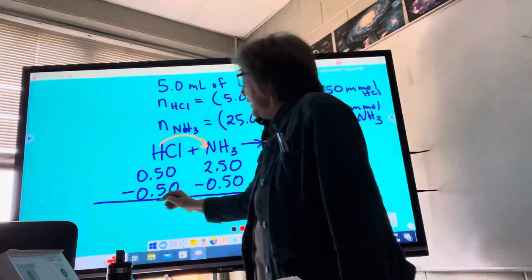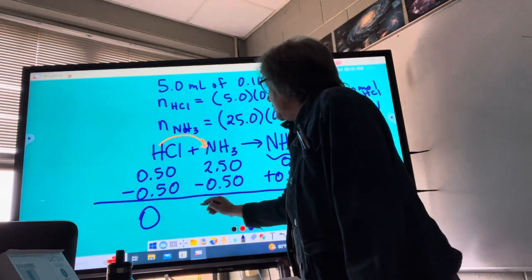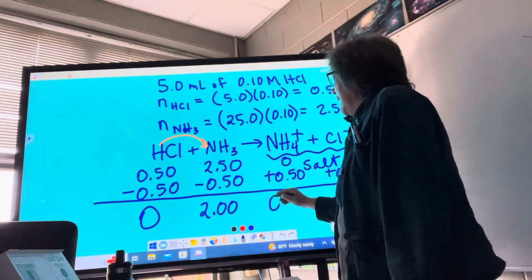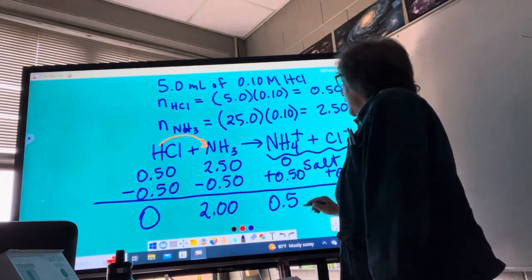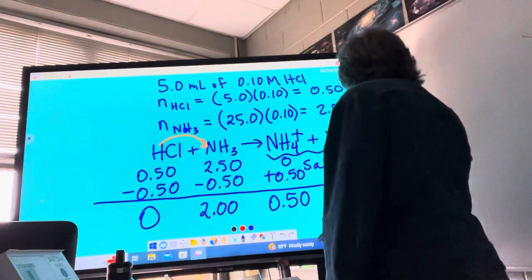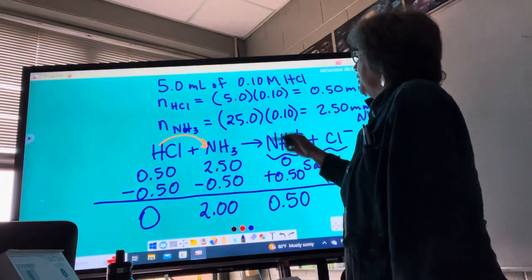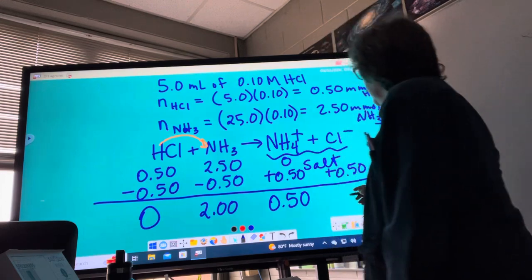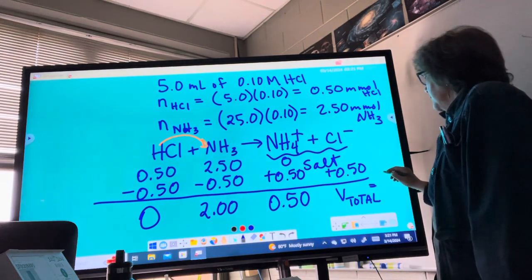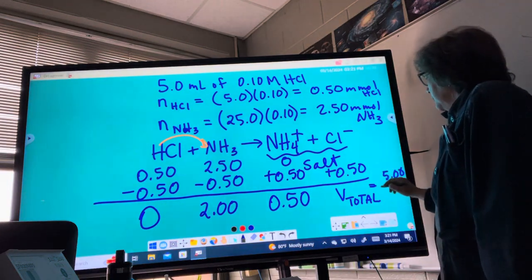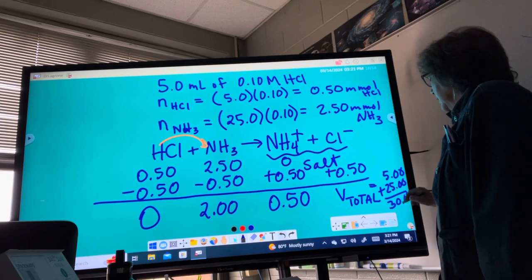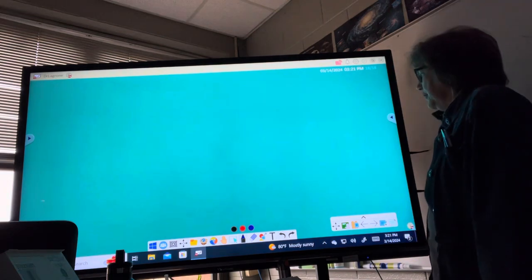So we don't have any excess acid. We have, what is this, 2.0 millimoles of the base. And we have this, that's a lot of millimoles of the salt, so we can't neglect that. Here we go. So now, getting our new concentrations, our new volume, we took 5 and 25. So the volume total now, after we add the acid and base, is 5 plus the 25, which makes 30 milliliters.